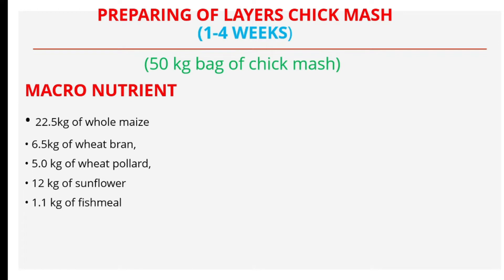The ingredients are divided into two categories. First, we have the macronutrients — the major ingredients that must be present in the feed. For layer chicks within the age of one to four weeks, if you want to prepare a 50 kg bag of chick mash, you need to add 22.5 kg of whole maize.